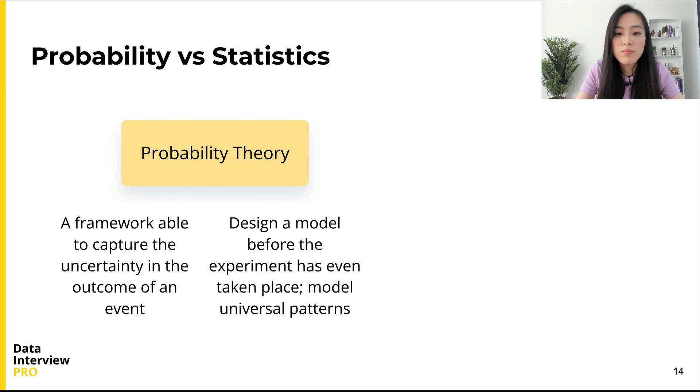We can use probability theory along with knowledge of the rules of the experiment to design a model before the experiment has even taken place. It means that probability solves problems even when there is no observed data. It tries to discover and model universal patterns.